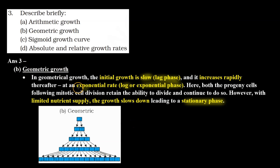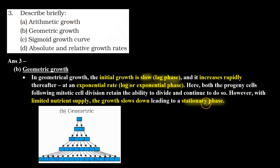B part — geometric growth. In geometrical growth, the initial growth is slow, that is the lag phase, and it increases rapidly thereafter at an exponential rate, that is the log or exponential phase. Here, both the progeny cells, following mitotic cell division, retain the ability to divide and continue to do so. However, with limited nutrient supply, the growth slows down, leading to a stationary phase.